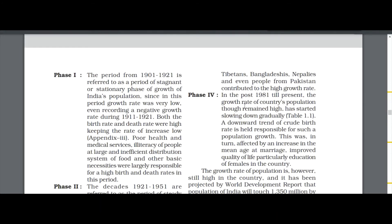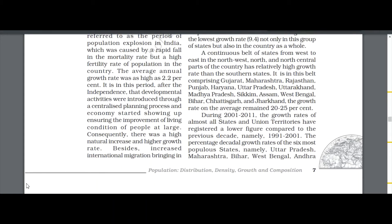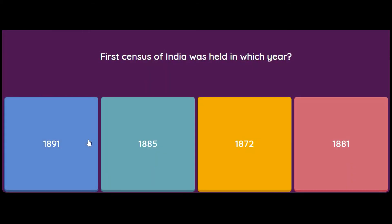The next question is: the first census of India was held in which year? Options are 1891, 1885, 1872, or 1881. This is a tricky question — the first complete census was held in 1881, but the first census was held in 1872.